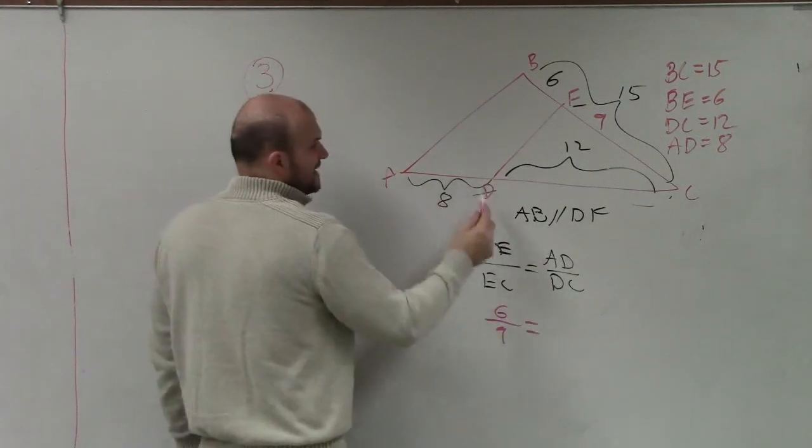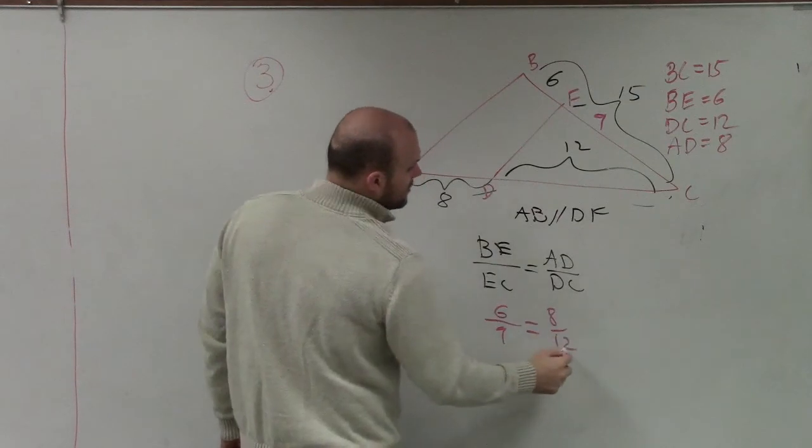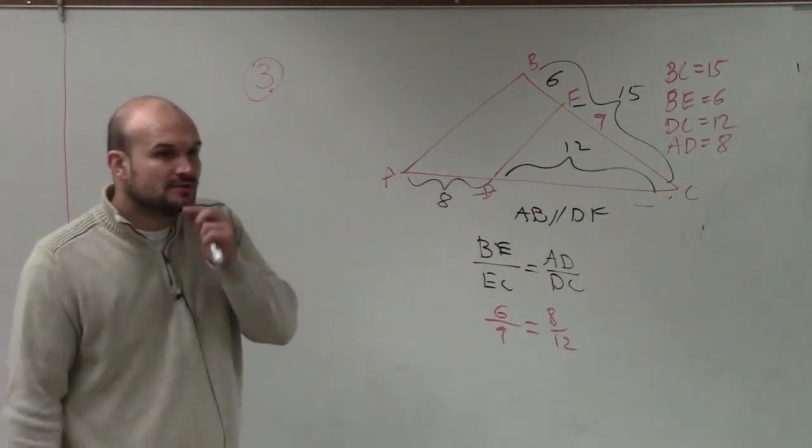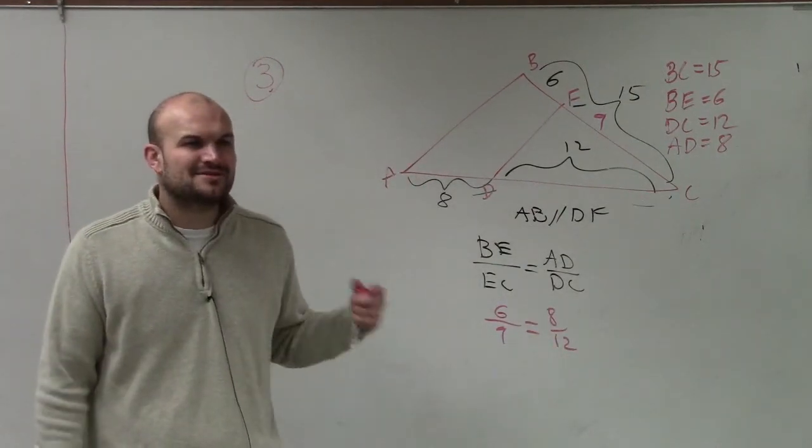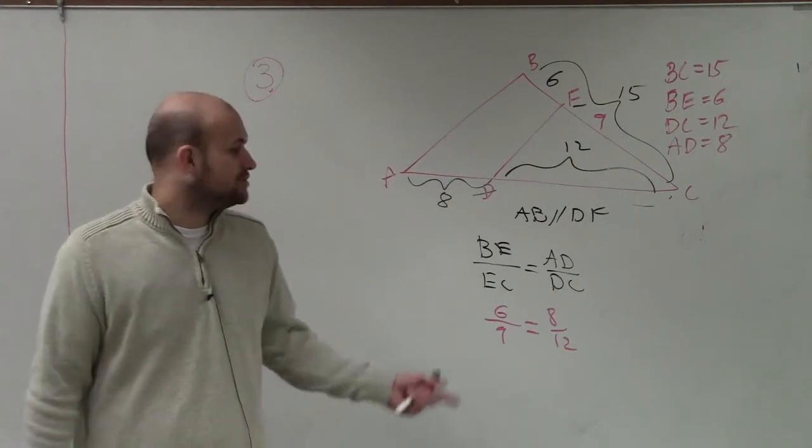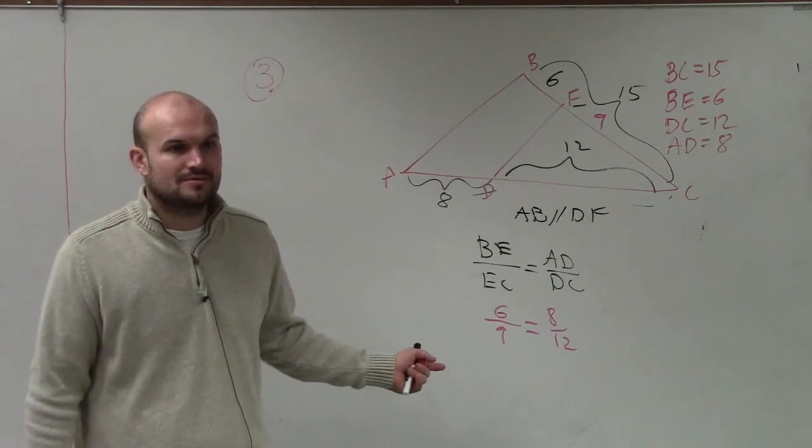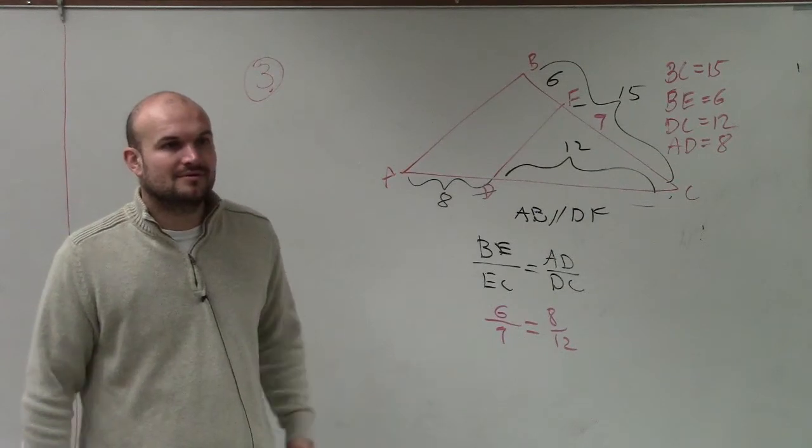So 6 is to 9, which is equal to AD, which is 8, over 12. Caleb, are those equal to each other? Same time I asked you the same question, you're doing the same thing. Did you do the cross product like I asked you? Oh yeah, they are equal.